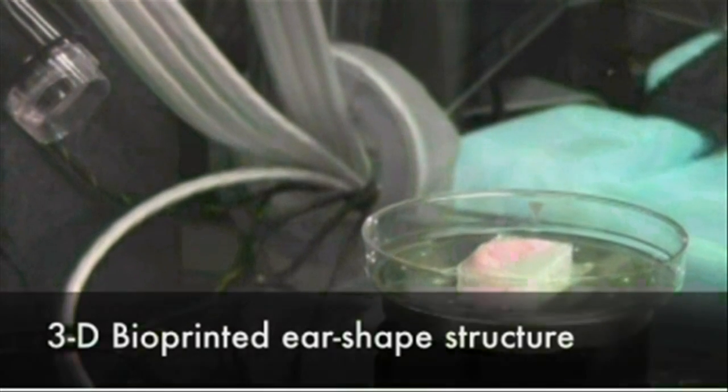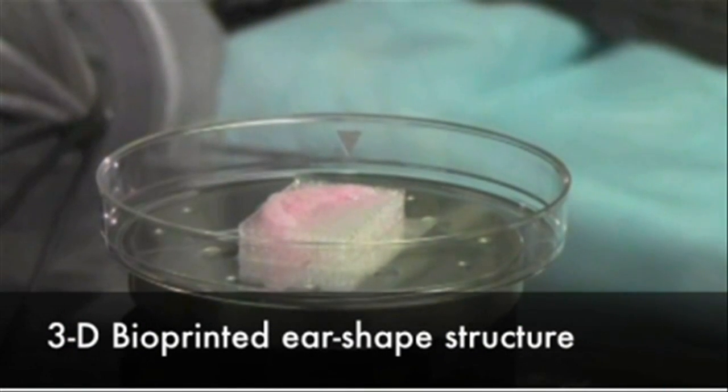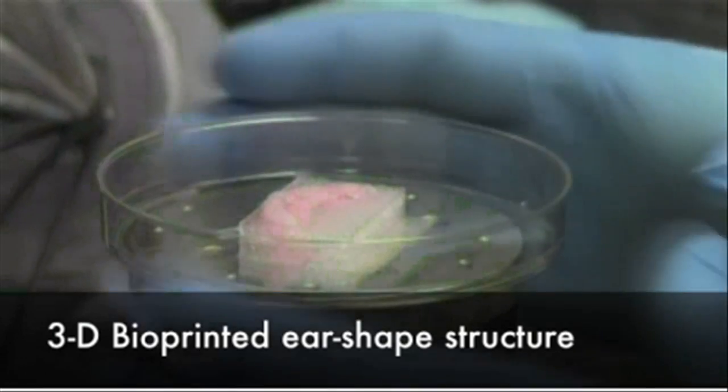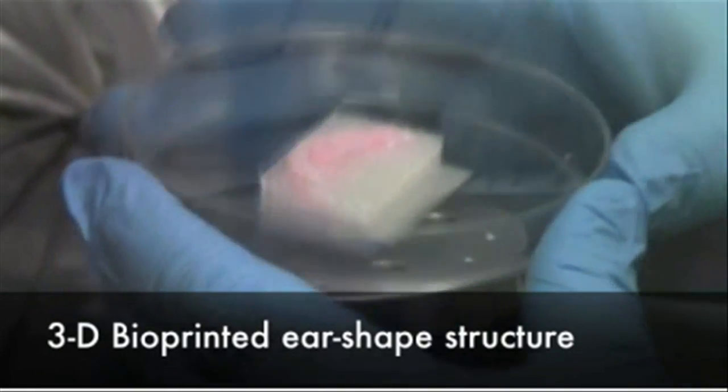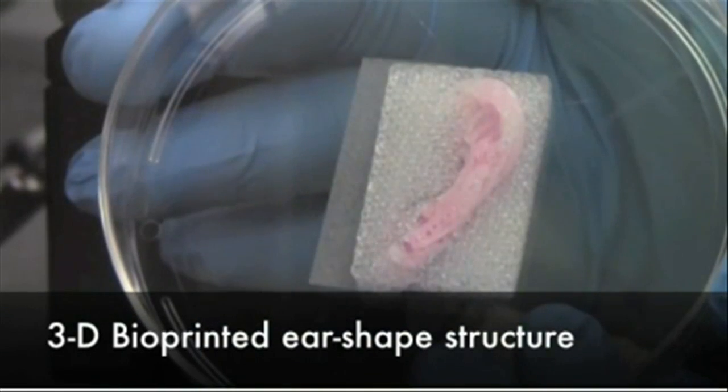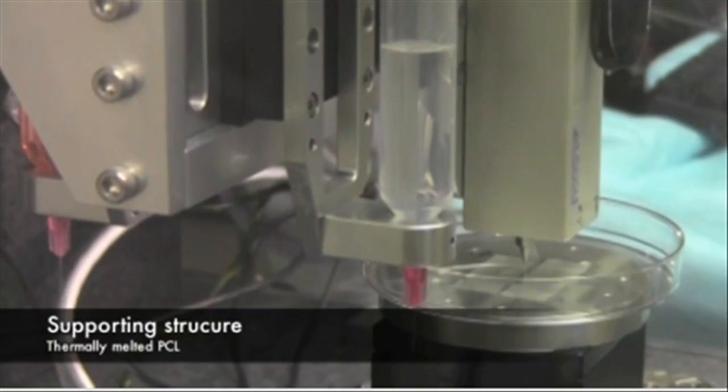Another advantage of the ITOP system is its ability to use data from CT and MRI scans to tailor-make tissue for patients. For a patient missing an ear, for example, the system could print a matching structure.